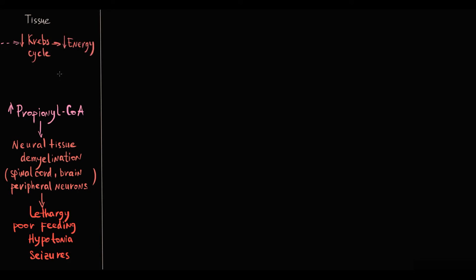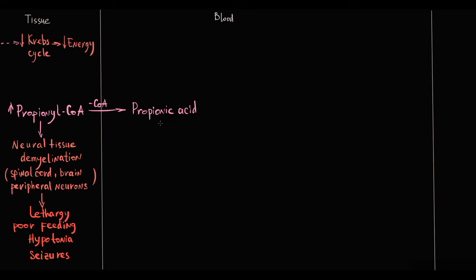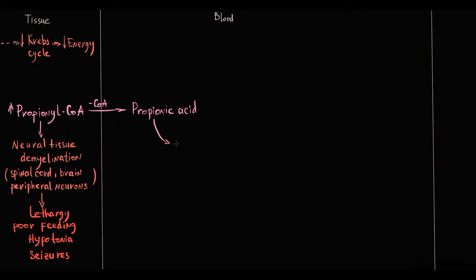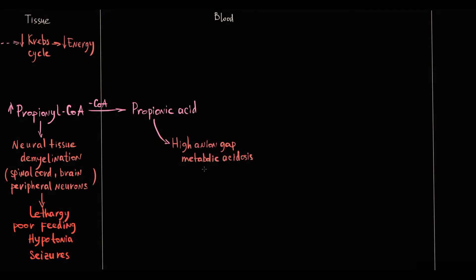From propionyl-CoA in tissues, coenzyme A is cleaved with formation of propionic acid, which leaves the cell into blood circulation. When an excessive amount of propionic acid enters the circulation, as any organic acid, it immediately causes high anion-gap metabolic acidosis.